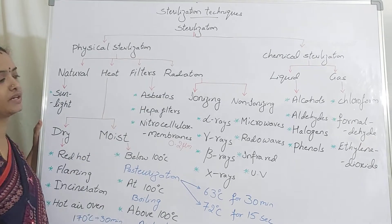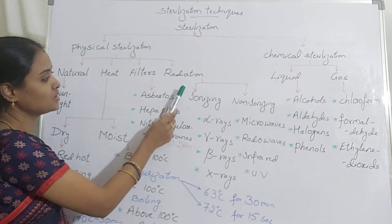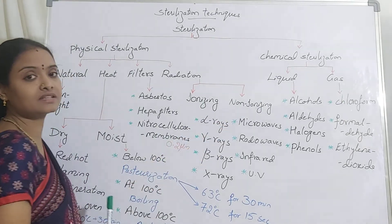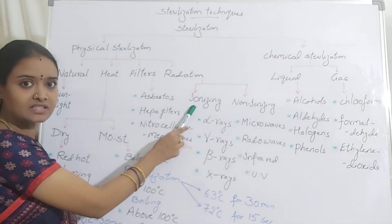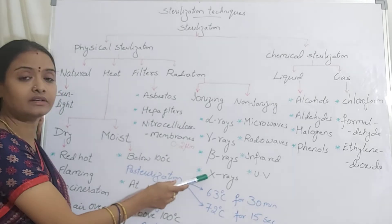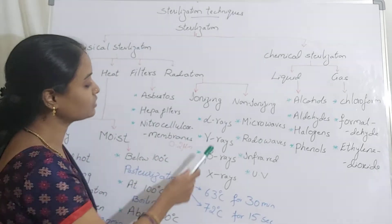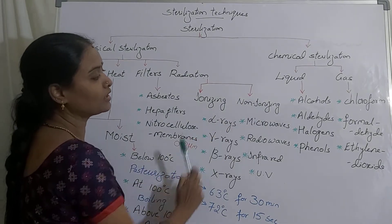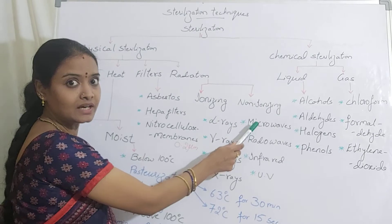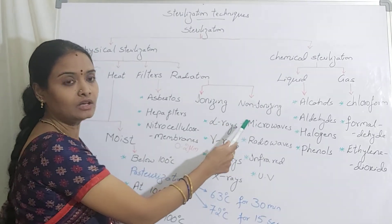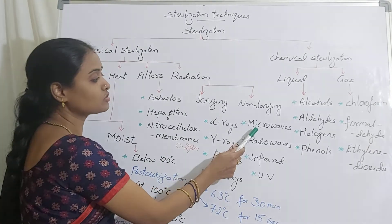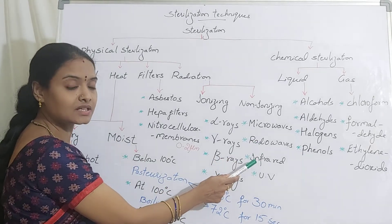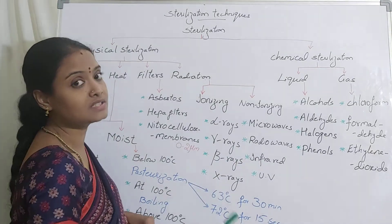Sterilization using radiation has two types: ionizing and non-ionizing radiation. Ionizing radiations include alpha, beta, gamma, and X-rays. These rays penetrate into the cell and denature the DNA. Non-ionizing radiations include microwaves, where increased temperature and pressure kill the organisms. Infrared rays cannot penetrate into the cell but can be used for surface sterilization.